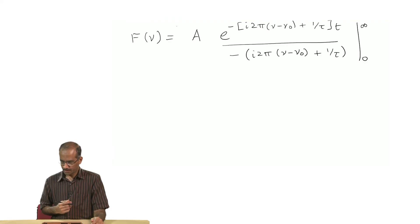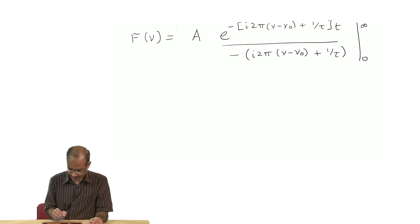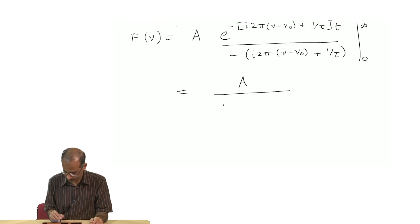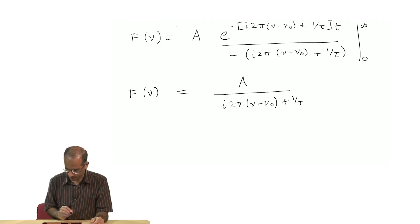f of ν would be, a can be taken outside the integral, and this result of integral should be evaluated between 0 and infinity. You can see that if I put the upper limit t equal to infinity, the numerator will simply go to 0, and if I put the lower limit it is going to give me 1. So the final result will be a divided by [i2π(ν-ν₀) + 1/τ].